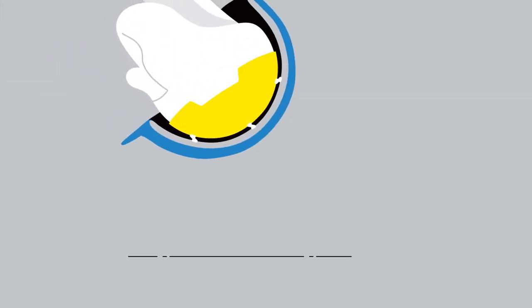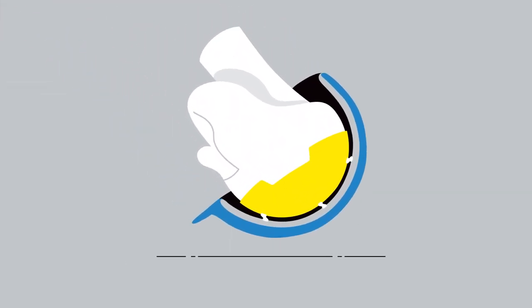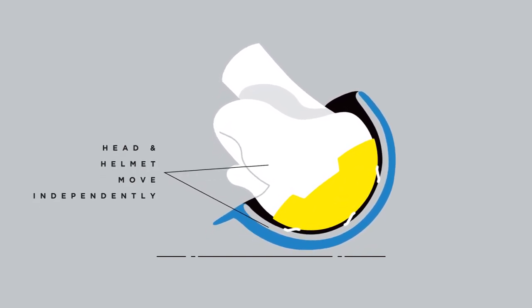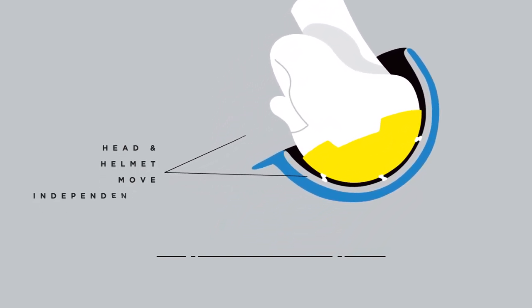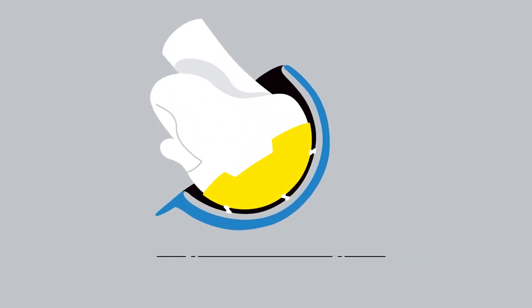When the MIPS low friction layer moves during the critical milliseconds of an impact, it allows the helmet to rotate independently from the head. This can reduce and redirect some of the rotational motion that would otherwise be translated to the brain.